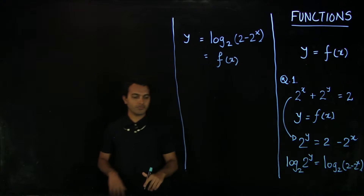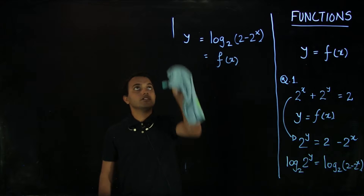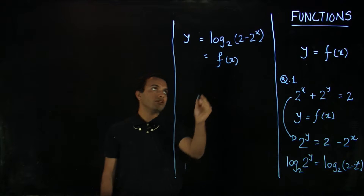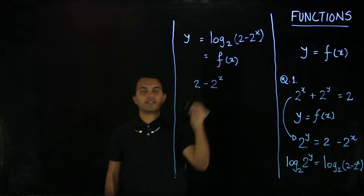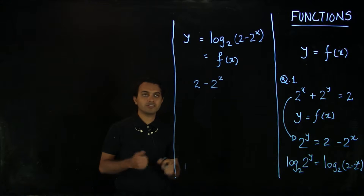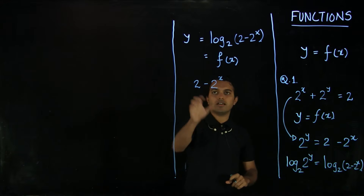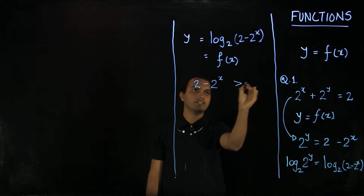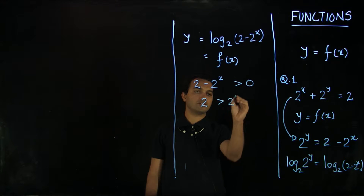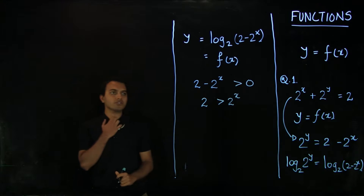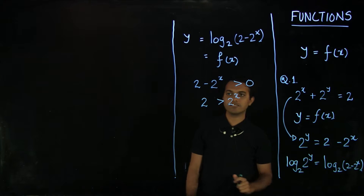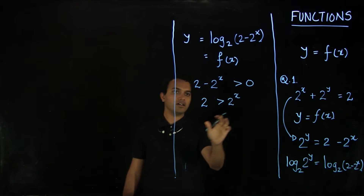Once we have that, we can figure out the domain and range of this function. The log function has a specific requirement for its arguments: they must be positive. This is similar to properties we used before, such as the denominator should not be 0 or the argument of a square root should not be negative. So from the log function, we get the constraint: 2 − 2^x > 0. We also know that the exponent of any function is always positive.